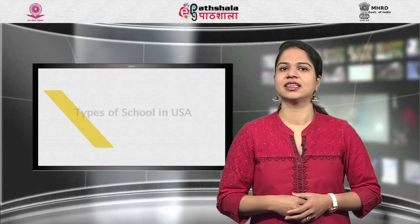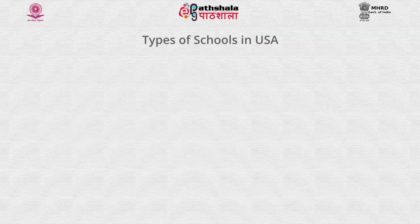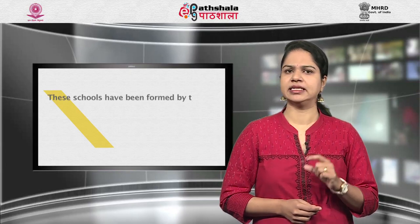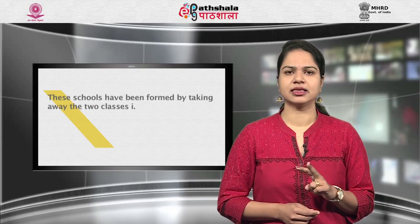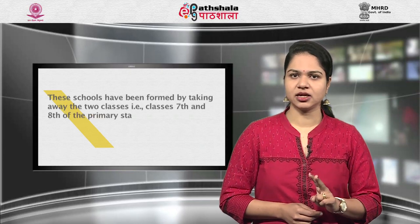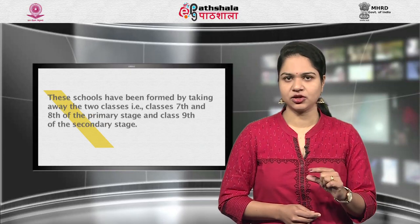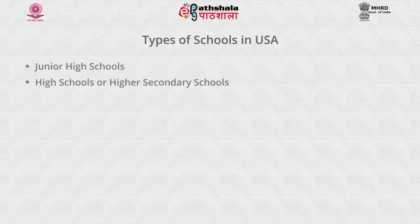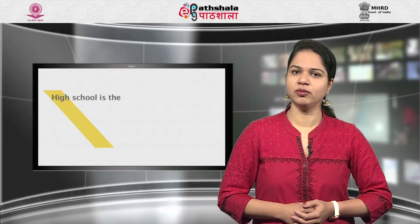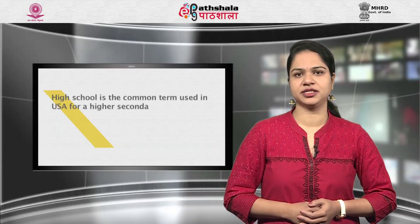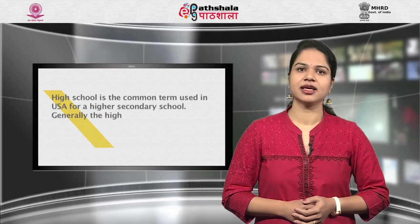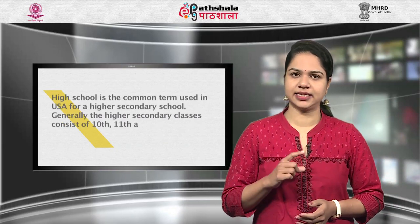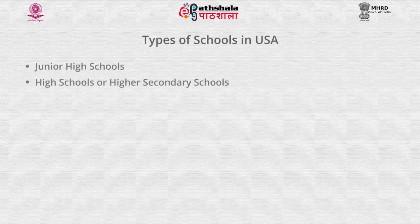The types of schools in USA include the junior high school, formed by taking the 7th and 8th classes of the primary stage and the 9th class of the secondary stage. Next are high schools or higher secondary schools; the common term used in USA for a higher secondary school generally includes the 10th, 11th and 12th classes. Then there are comprehensive high schools, which include 4 classes from 9th to 12th, starting at the end of the 8-year primary stage.